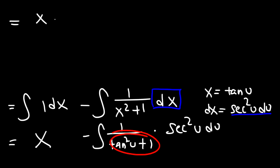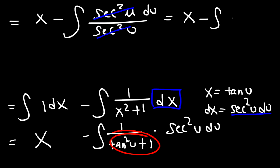So we have the integral of sec² u du over sec², and we can cancel these two expressions. So what we now have is x minus the integral of 1 du. The integral of 1 du is u plus some constant c.